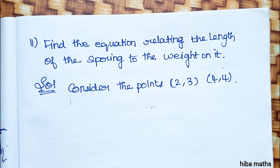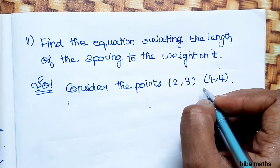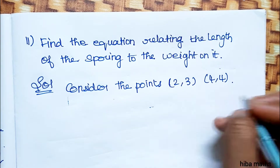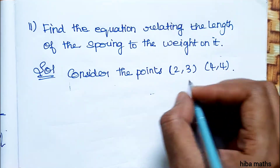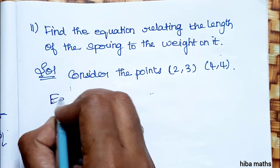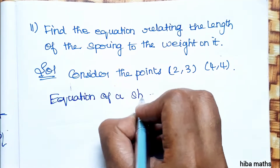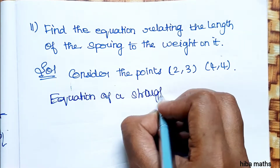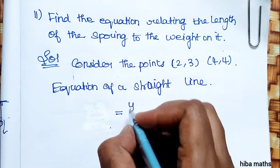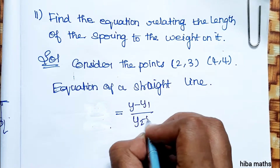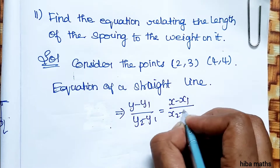Find the equation relating the length of the spring to the weight on it. I will use the first two-point formula. You can use the third and fourth points. If you want to use the first two points, you can use the first two-point formula. The equation of a straight line — two-point formula.